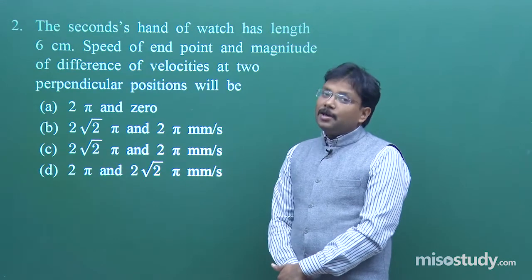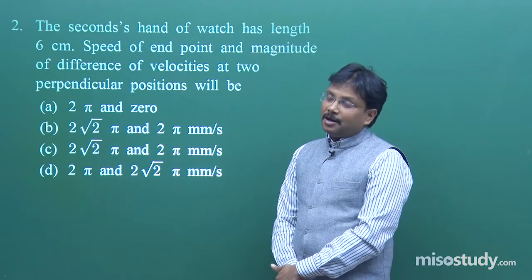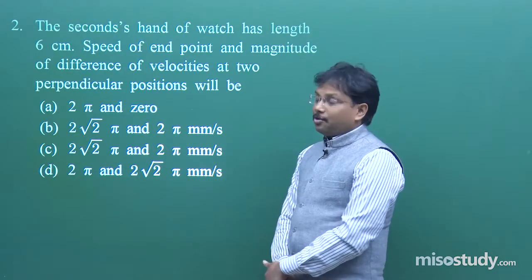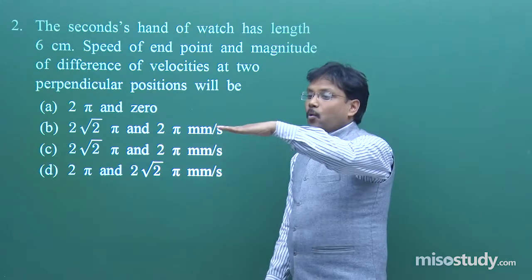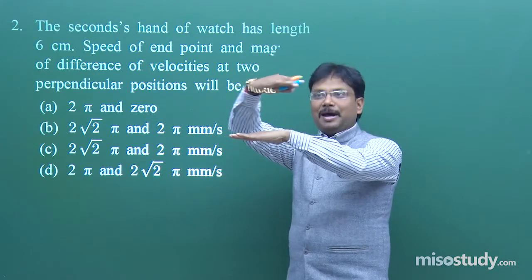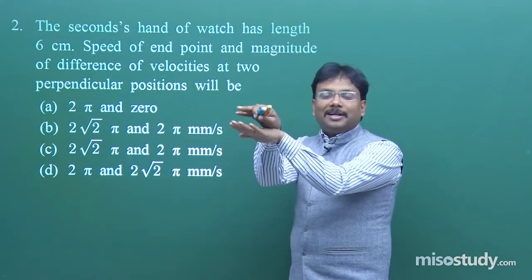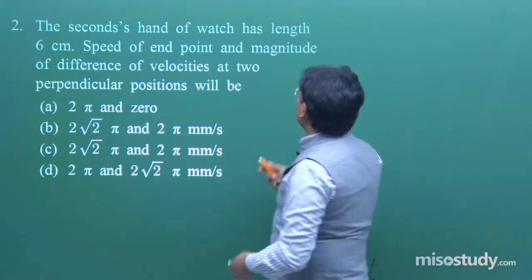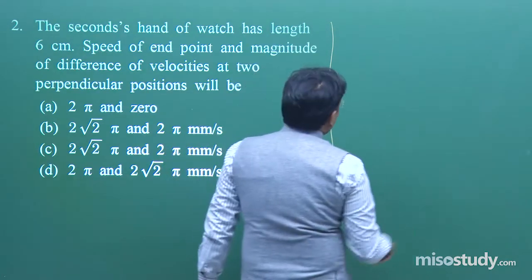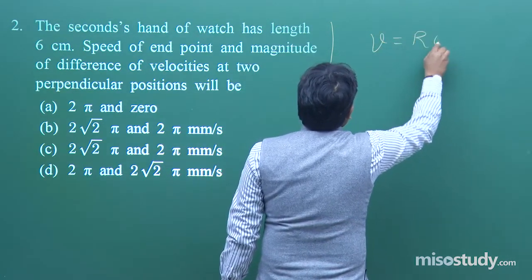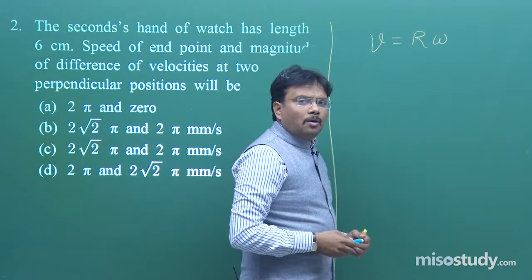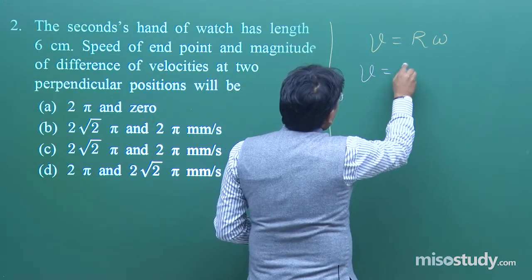This question is really very simple. The speed of the endpoint and the magnitude of the difference of velocities — imagine one velocity is in this direction and another in the perpendicular direction. The formula is v = rω.